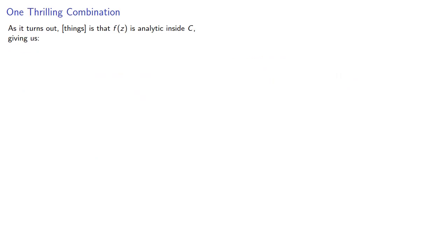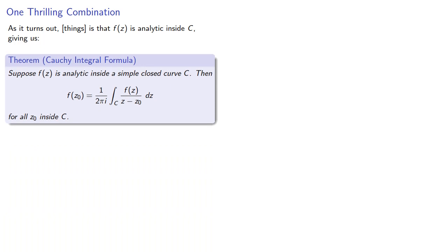Now as it turns out the things we have to assume is only that f of z is analytic inside our closed curve. And this gives us the Cauchy integral formula. Suppose f of z is analytic inside a simple closed curve c. Then the value at z0 is determined by an integral.